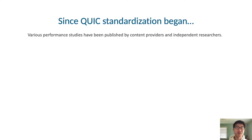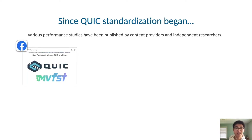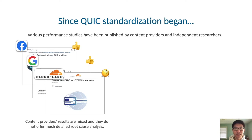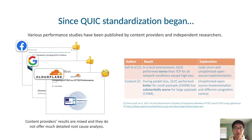Since QUIC standardization began, there have been numerous performance studies published by large content providers and independent researchers. These content providers include Facebook, Google, and Cloudflare, among others. Facebook and Google were able to significantly reduce overall latency and tail latency by using QUIC. On the other hand, Cloudflare noted from their production experiments that QUIC's performance was 1-4% worse compared to TCP. Since these content providers did not provide much detailed root cause analysis, it is unclear why Cloudflare's results did not match those of Facebook or Google. The few performance studies done by independent researchers on open source IETF QUIC implementations have mainly described negative results for QUIC, citing unoptimized code and different congestion control algorithms as the main reasons.